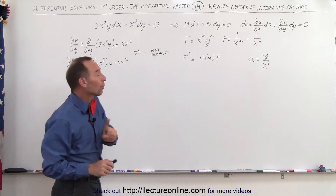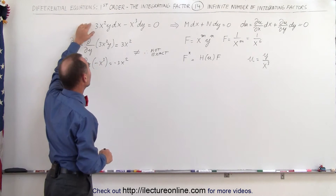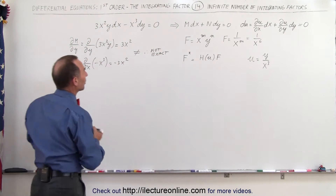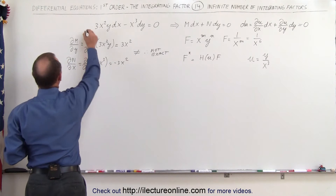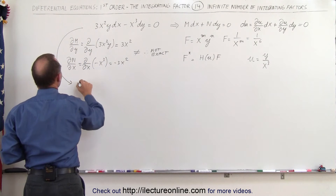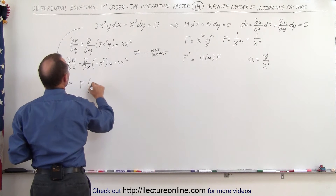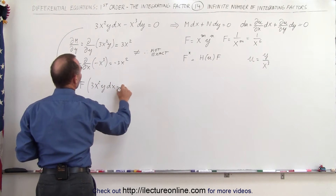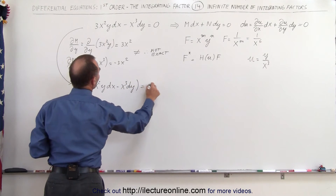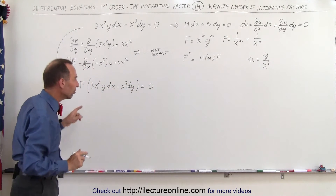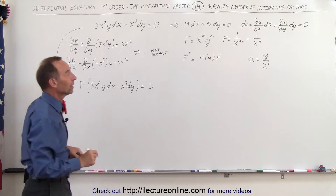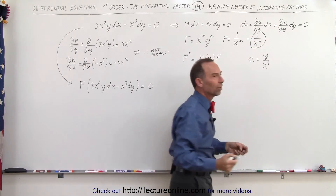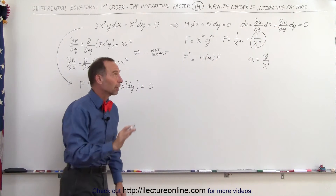To turn the equation into an exact differential equation, we take the existing differential equation and multiply by what we call the integrating factor. So in this case we take the equation and say that f times the quantity 3x squared y dx minus x cubed dy is equal to zero. In the last video we found that integrating factor to be 1 over x to the sixth — that wasn't the only one we found, but that was one of them.